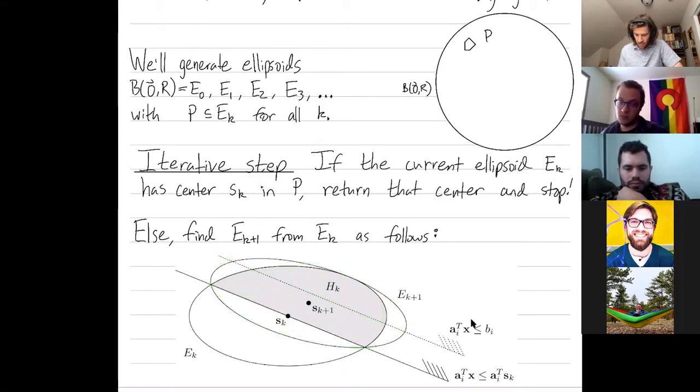So this ellipse epsilon k plus 1 is chosen so that it's tangent to this region hk in the right spots.